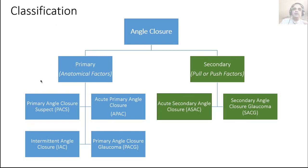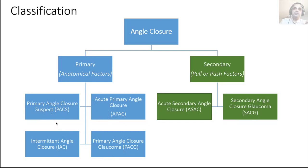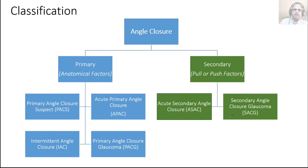Angle closure is classified into a primary and a secondary form. The primary form, when you have an anatomical issue with the eye, is further classified into: primary angle closure suspect (PACS), acute primary angle closure (APAC), intermittent angle closure (IAC), and primary angle closure glaucoma (PACG). These roughly follow chronologically. Secondary angle closure occurs when there is a definitive secondary cause in the eye, leading to either acute secondary angle closure (ASAC) or secondary angle closure glaucoma (SACG).